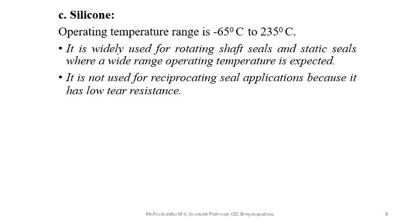Silicone: it is an elastomer with an operating temperature range of minus 65°C to 35°C. Compared to the previous two cases, this is an extremely wide temperature range. It is widely used for rotating shaft seals and static seals where a wide range of operating temperature is expected. It is not used for reciprocating seal applications because it has low tear resistance.